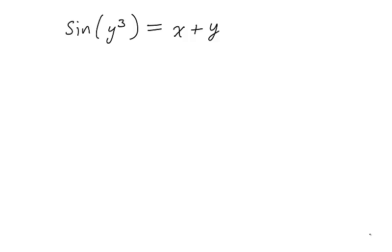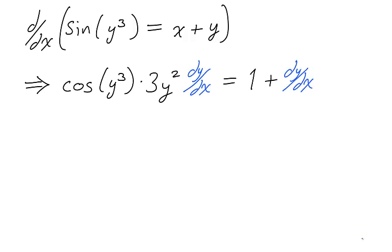When a function is defined implicitly through an equation, there is no need to write the function explicitly in order to find the derivative. Just take the derivative of the left and the right hand side individually. We calculated the derivative of the left hand side earlier, and the right hand side is just 1 plus dy dx.